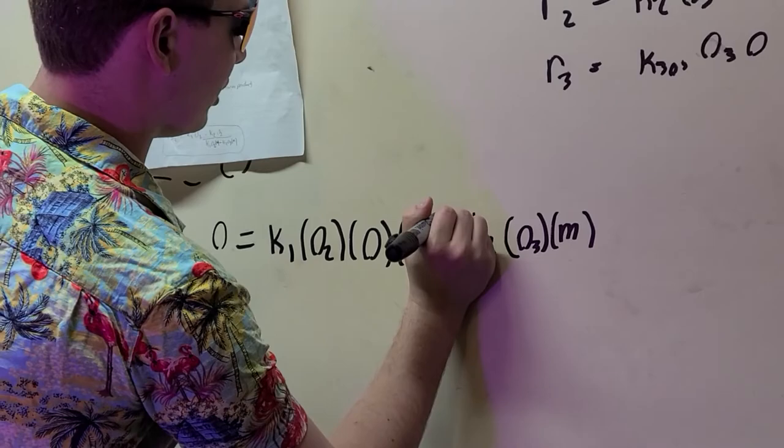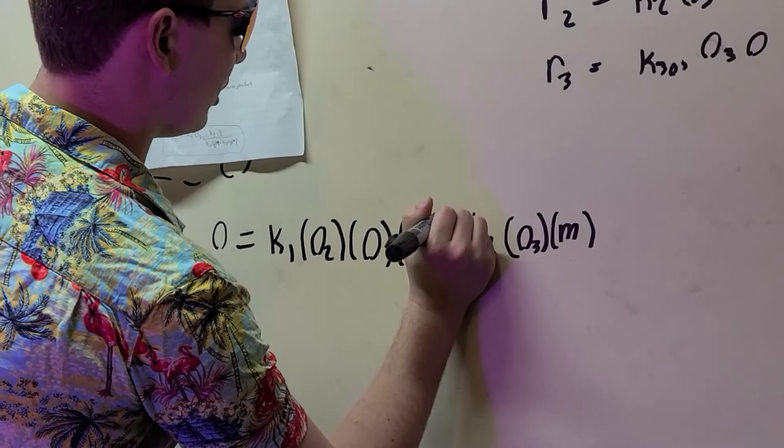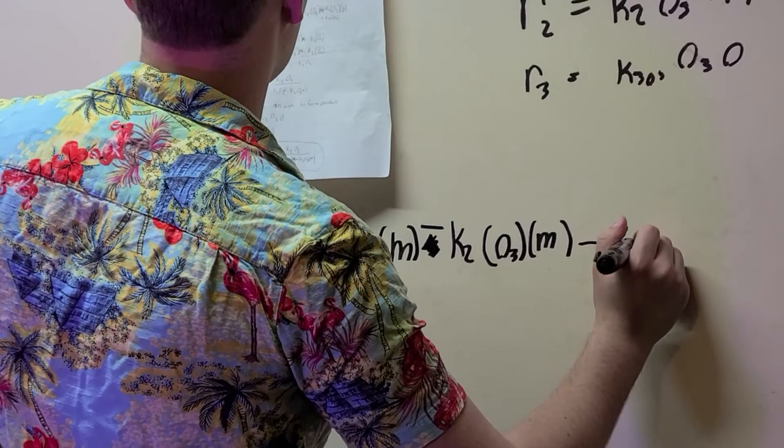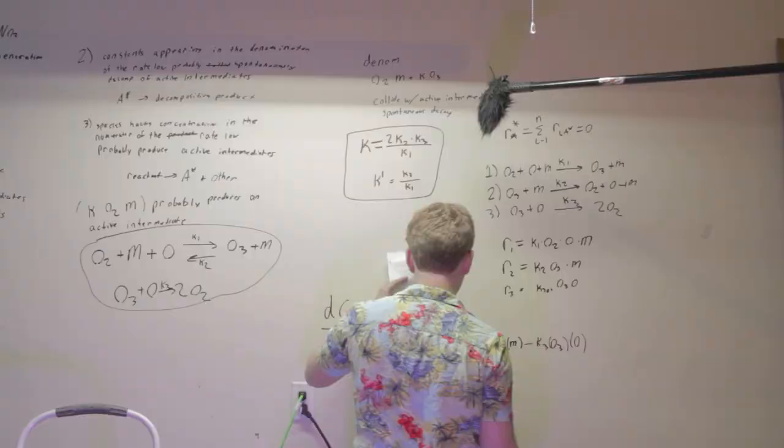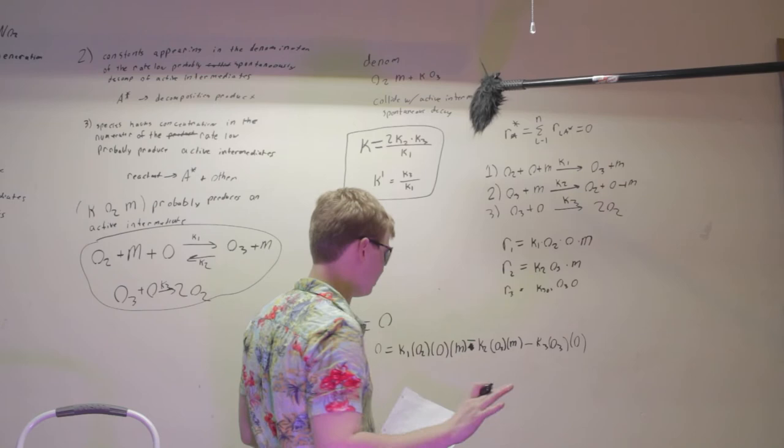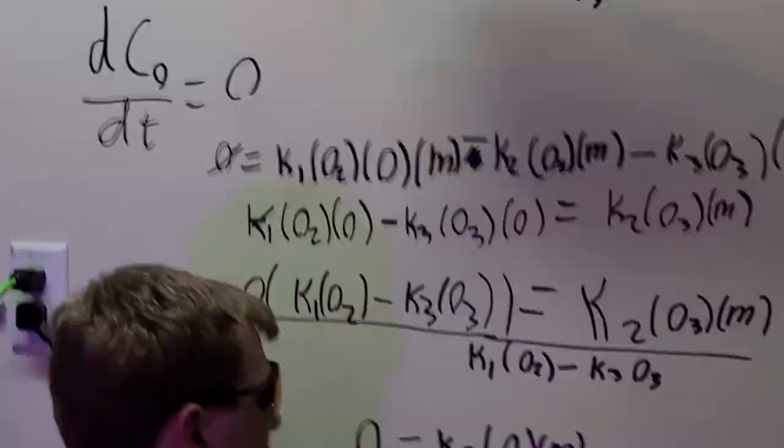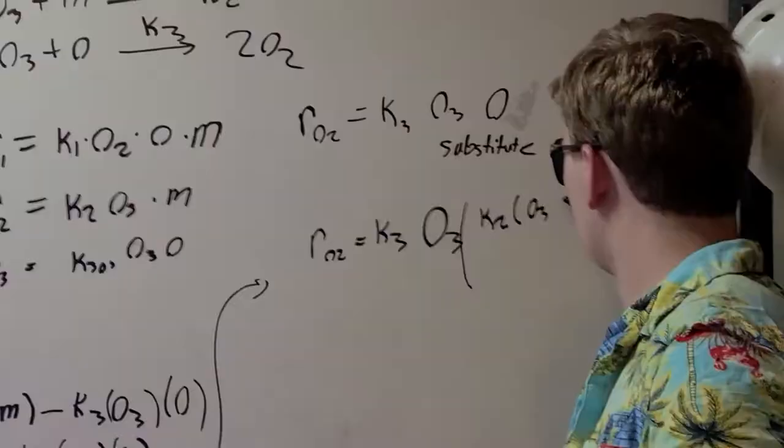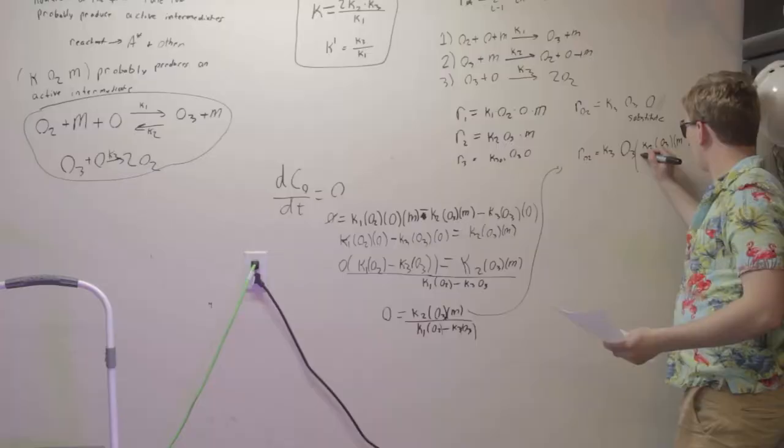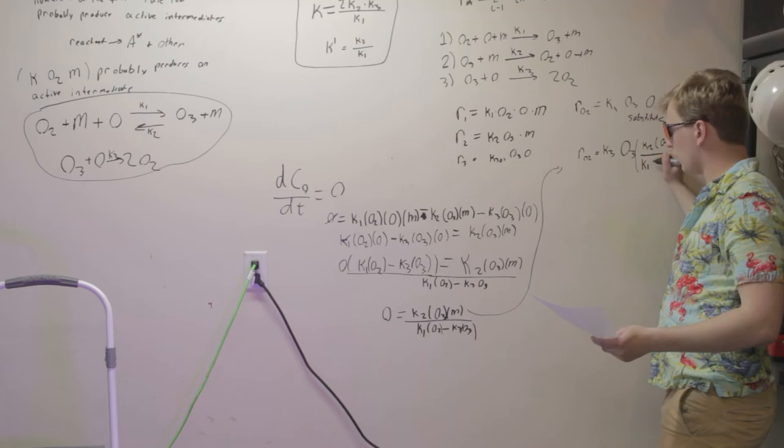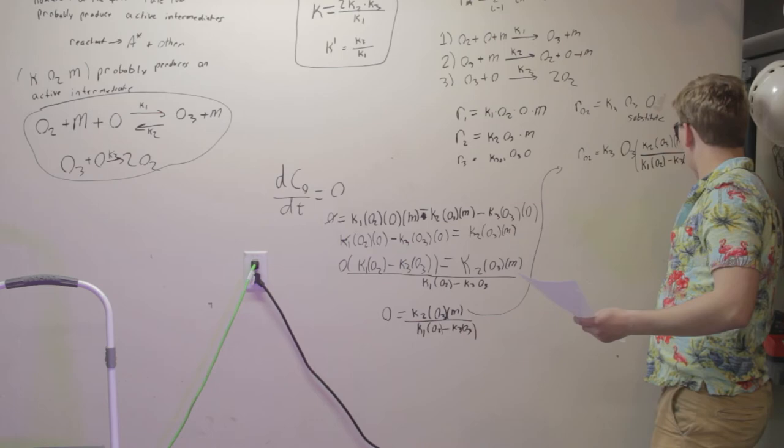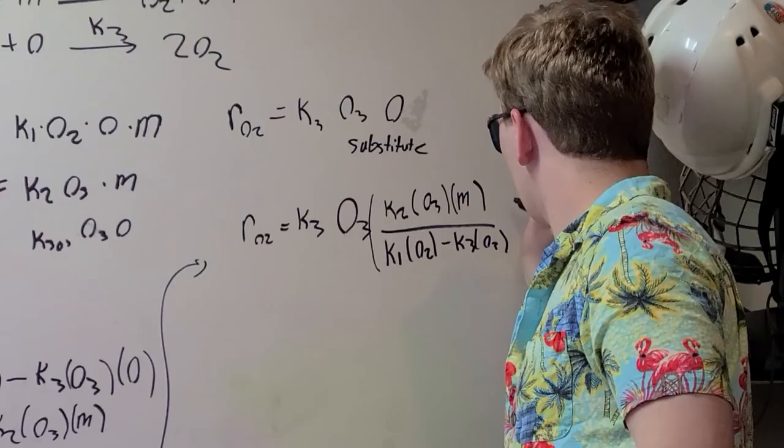And we will switch this, because it's actually a subtraction. So M minus K3 O3 O. Then, doing some basic algebra, all over K1 O2 minus K3 O3. And this is our final rate law of the production of O2.